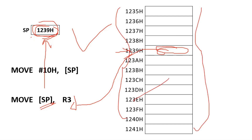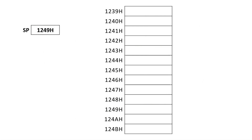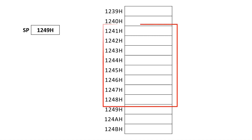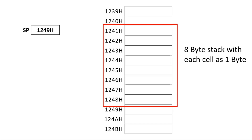Similarly, to access data from memory — for example, the value at address 1239H — you store that address in SP and use SP as the source within square brackets to copy data to R3. This is how register indirect addressing works, allowing you to store or access data at any random address. But how is stack different? Stack is not a separate hardware — it is part of memory. Stack is a theoretical concept that restricts the way memory is accessed.